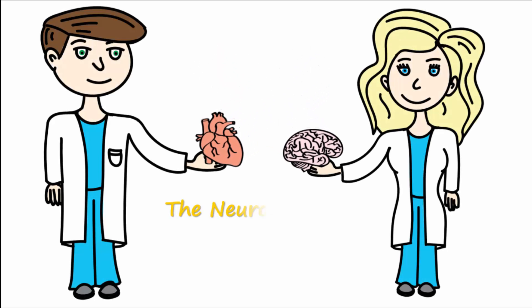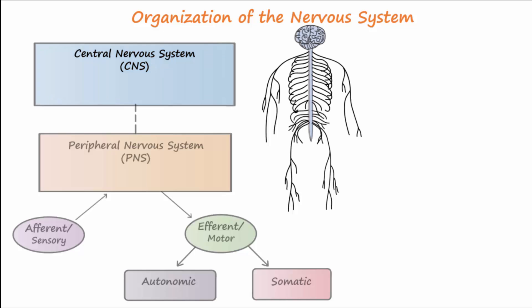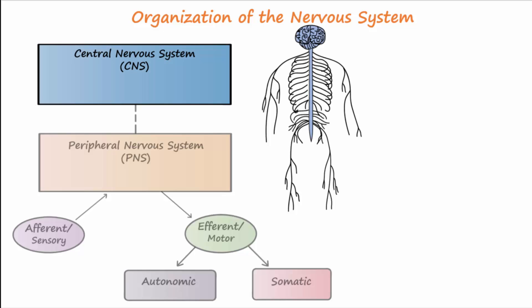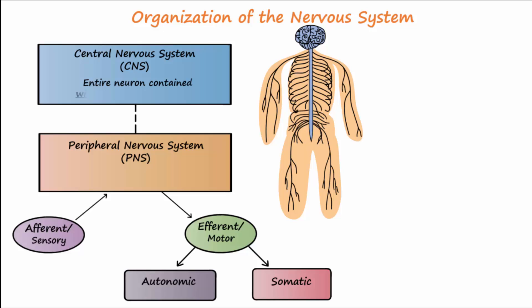Today's topic is the neuromuscular junction. The nervous system is divided into two main parts: the central nervous system or CNS and the peripheral nervous system or PNS. If the entire neuron is contained within the brain or spinal cord, then the neuron is considered to be part of the CNS. If any part of the neuron extends outside the brain or spinal cord, then the neuron is part of the PNS.